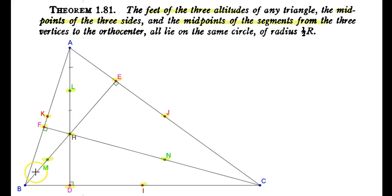Points L, M, and N are those midpoints. Observe that AL = LH, BM = MH, and HM = MC. What is so interesting is that the feet of the altitudes, the midpoints of the sides, and the midpoints of the segments from the three vertices to the orthocenter — those nine points are all concyclic, meaning they all lie on the same circle.